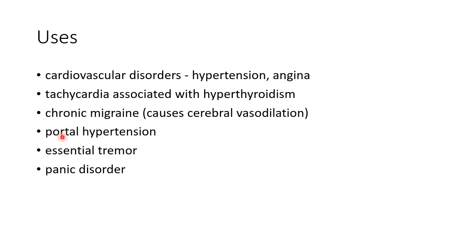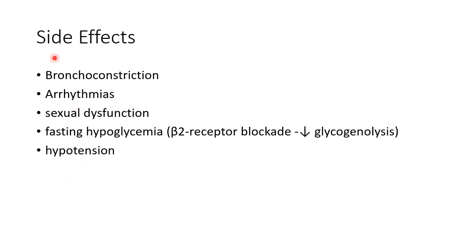It is used in the treatment of portal hypertension, essential tremor, and panic disorder. Side effects of propranolol include bronchoconstriction, arrhythmias, sexual dysfunction, fasting hypoglycemia, and hypotension. Fasting hypoglycemia occurs because of beta 2 receptor blockade, which causes decreased glycogenolysis, leading to hypoglycemia.